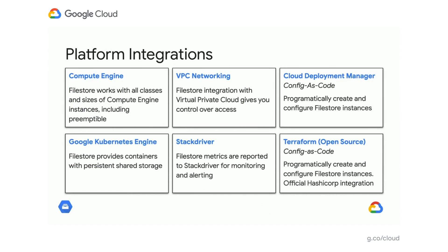Moving on from the core file features, I want to talk about some of the integrations. For Compute Engine, we fully support preemptible VMs, which are commonly used to optimize cost for batch workloads. In Kubernetes Engine, you can use Filestore automatically and configure it through the native NFS plugins and the CSI interface. On the networking side, Filestore is peered with your VPC network, enabling you to access it from authorized clients on that network. And based on the IP access control feature, you can further restrict which VMs on your VPC are allowed to access it. For infrastructure-as-code models, we're integrated with Deployment Manager and Terraform.